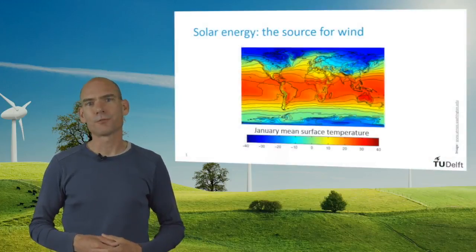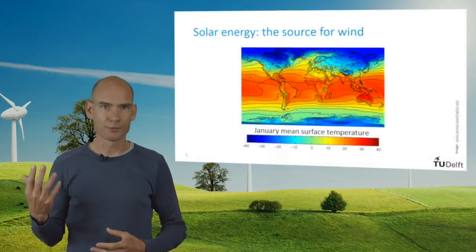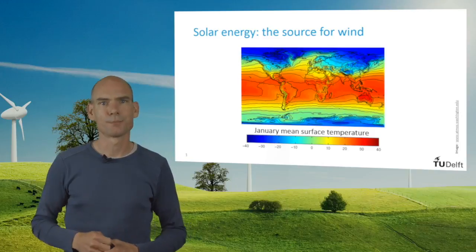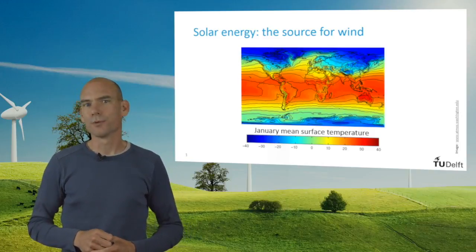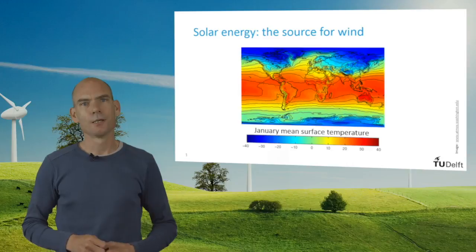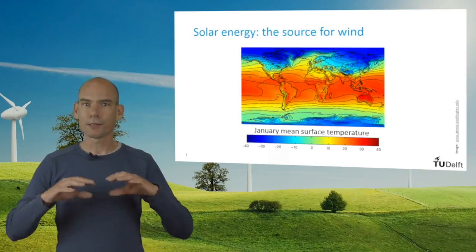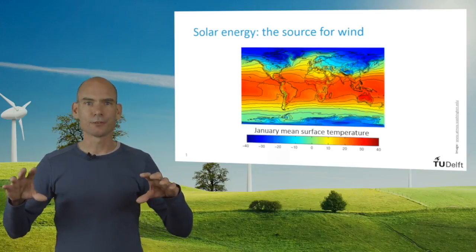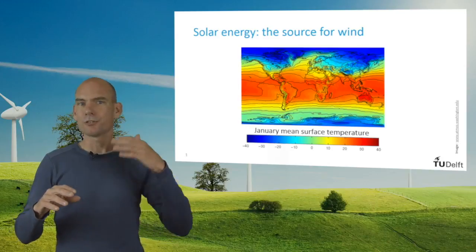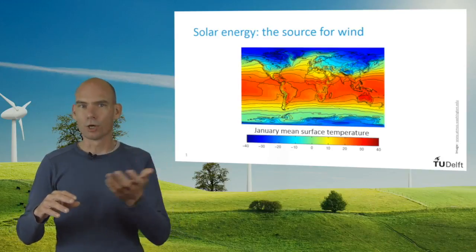Wind is created through temperature differences on the Earth's surface. Here you see a map of the mean surface temperature in January. Obviously, the temperatures are higher around the equator than around the poles, and this is driving the global patterns of wind.